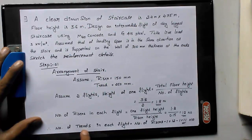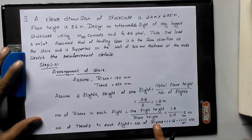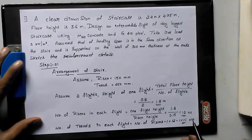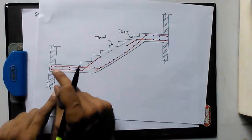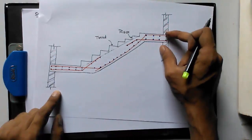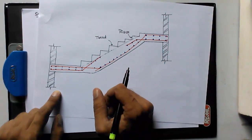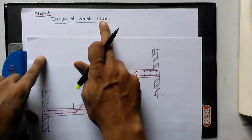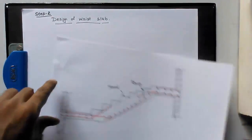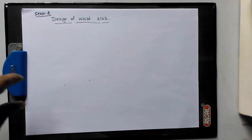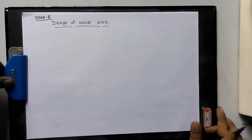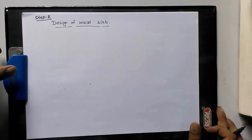Number of treads in each flight = number of risers − 1 = 12 − 1 = 11 treads, with 12 risers. The inclined slab connecting the steps is called the waist slab, and we need to design it. For the design of the waist slab, we assume the slab thickness D = 150 mm.